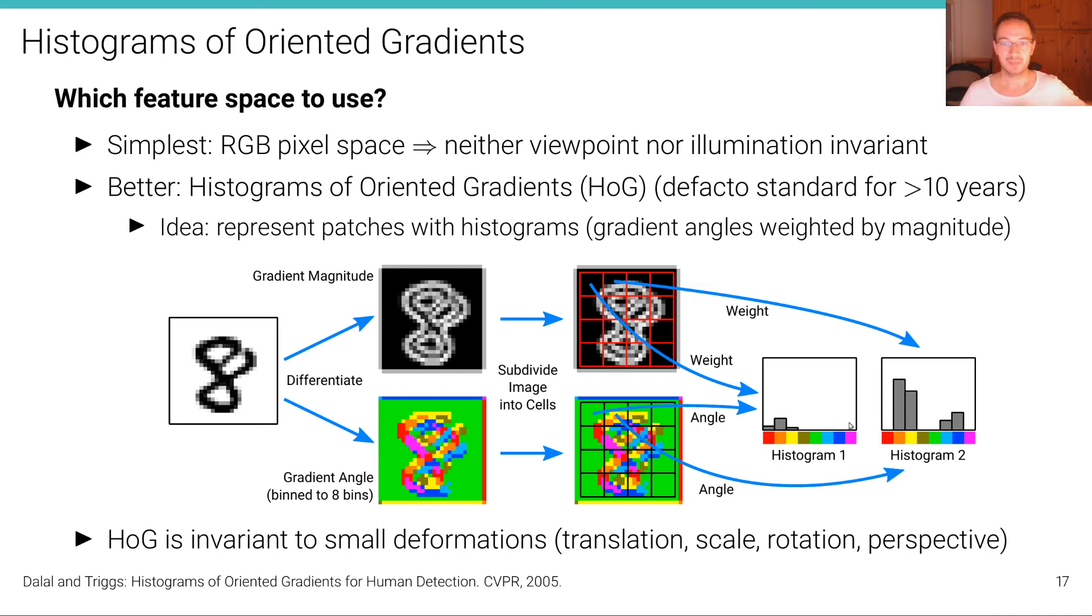Now, what is the advantage of this histogram vector compared to the original RGB pixel space? The advantage is that compared to the RGB raw pixel space, this histogram of oriented gradient features is invariant to small deformations. Like we can translate the image a little bit and we can scale and rotate it a little bit. And we can also apply a little perspective deformations and it will not alter the gradients too much because they are summary statistics of an entire region. And also because the gradient angles have been bent into this very coarse discretized binning representation.